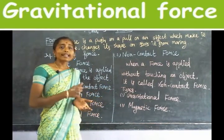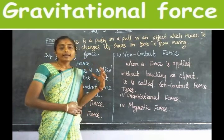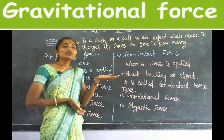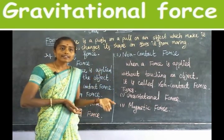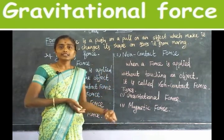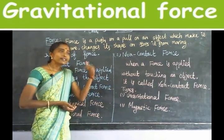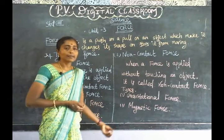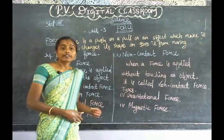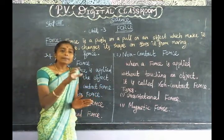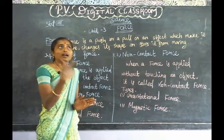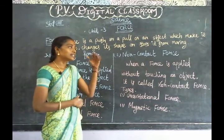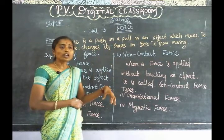Gravitational force is the force applied by the earth, pulling objects towards itself. For example, if you throw a ball upward, it comes back down. Even though we are not touching the ball after throwing it, it falls down because of gravitational force.